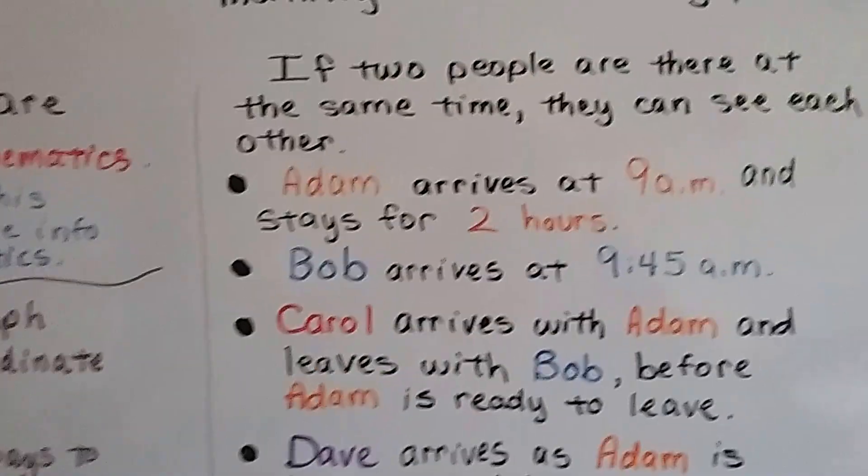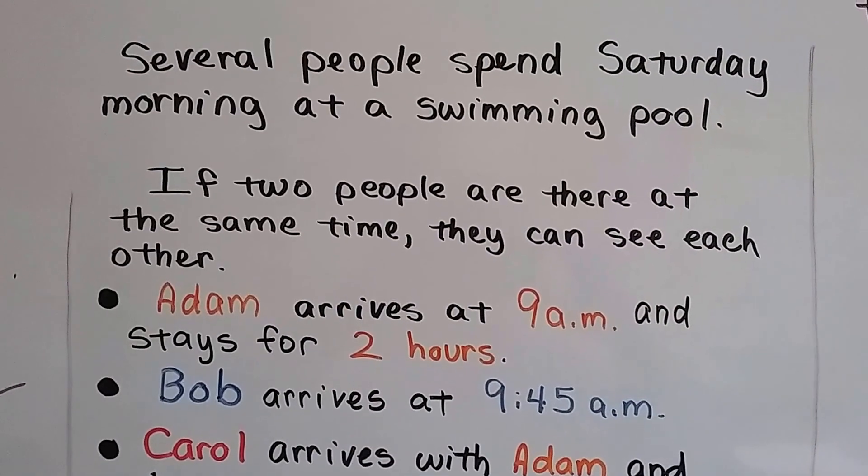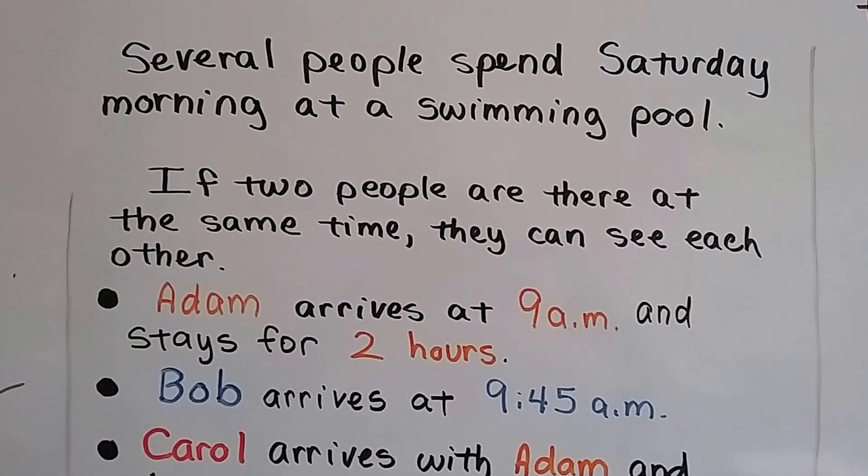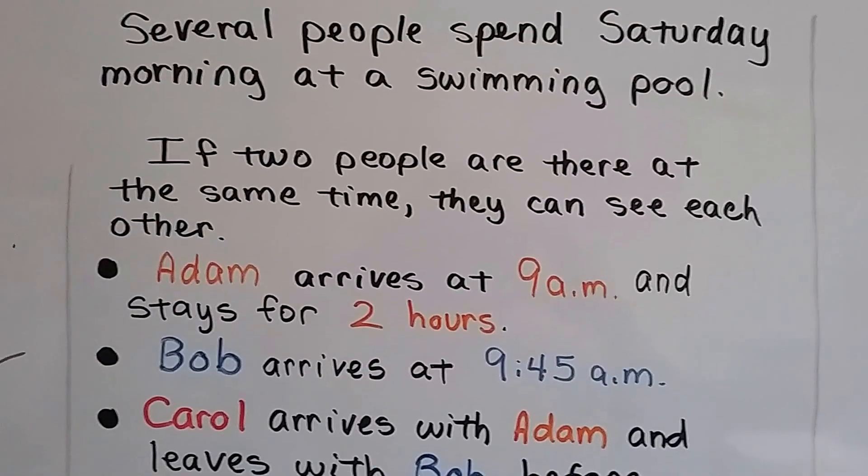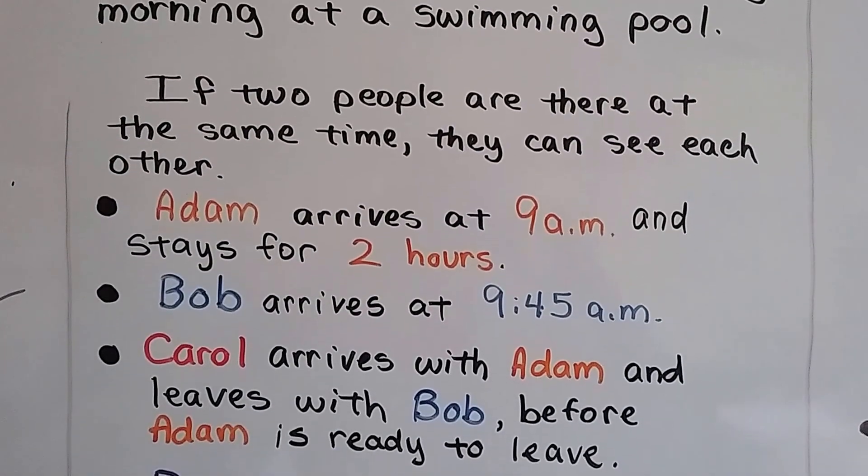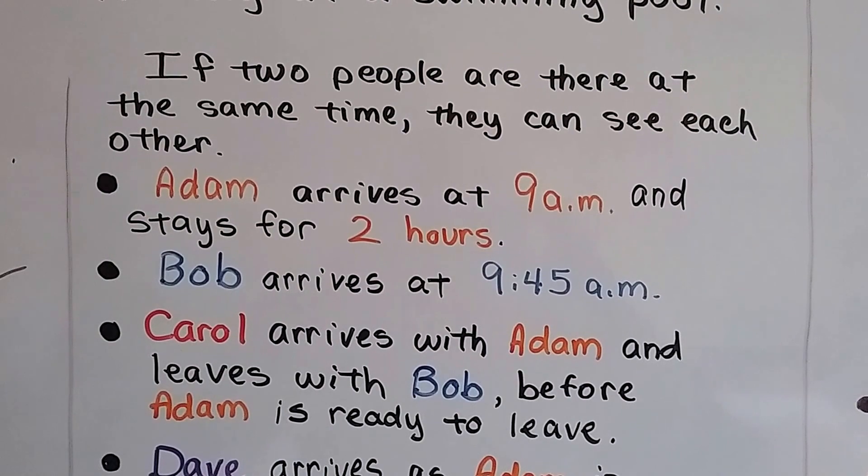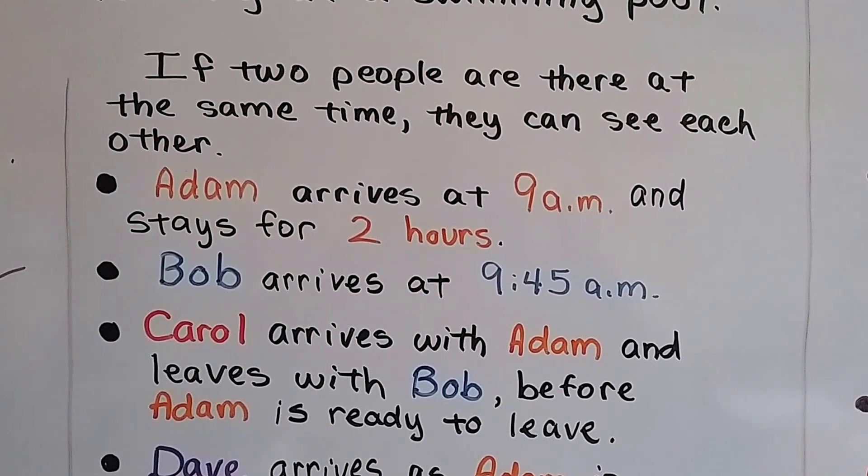Here's our problem. Several people spend Saturday morning at a swimming pool. If two people are there at the same time, they can see each other because the pool is not that big. Adam arrives at 9 a.m. and stays for two hours. That means he leaves at 11.